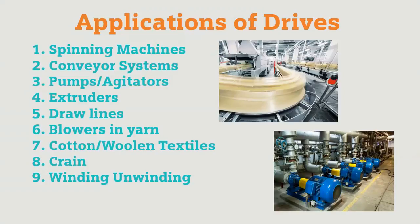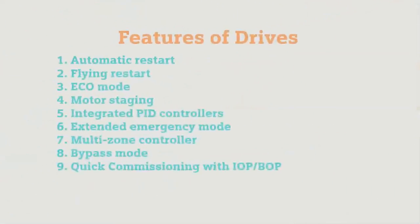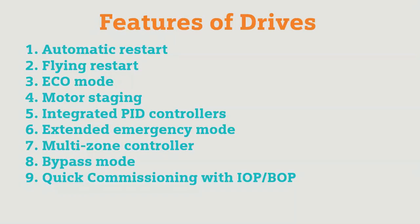There are thousands of applications in which we are using drives. Now we'll see the features of drives. Based on drive model and make, different features are available. For the Siemens AC drive, automatic restart will be activated when there is a power failure. Flying restart can be used when the inverter is connected to a running motor. Echo mode operation, motor staking for closed-loop control system, and integrated PID controllers — we can use a closed-loop control system with different variables like pressure, temperature, or flow.